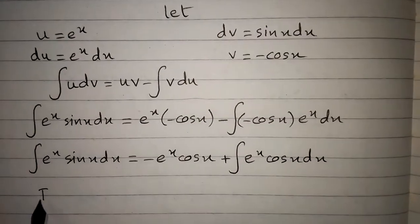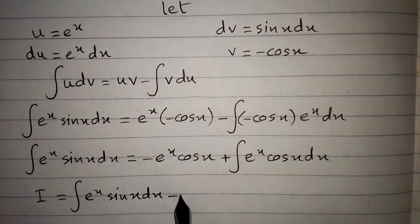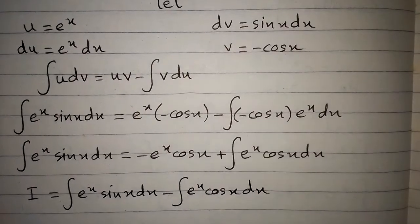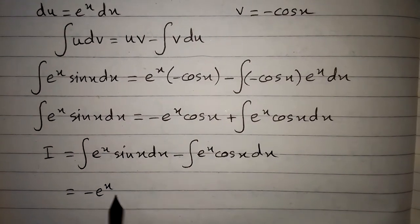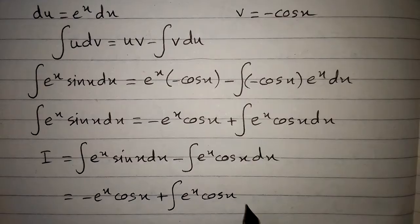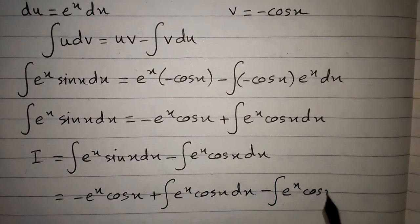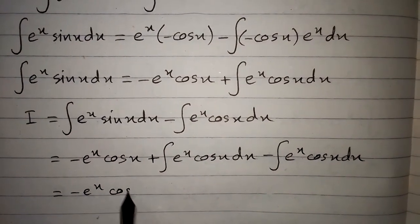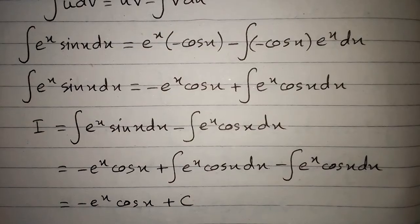Recall that i equals integral of e to the power x sin x dx minus integral of e to the power x cos x dx. Substituting our result and simplifying, the integral of e to the power x cos x terms cancel out. So we have i equals minus e to the power x cos x plus c, where c is the constant of integration. This is the final answer.